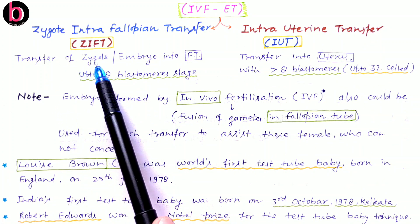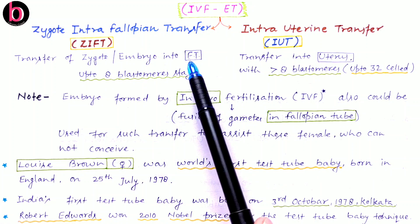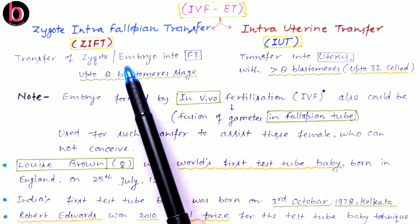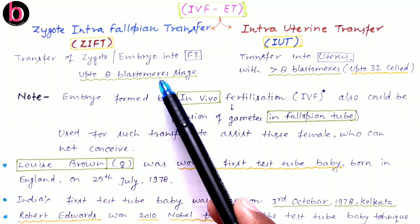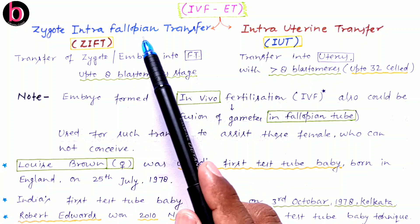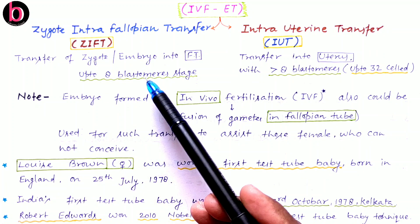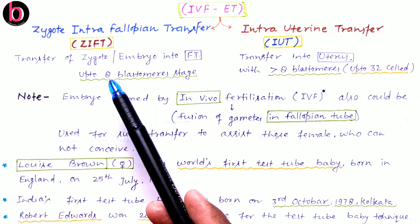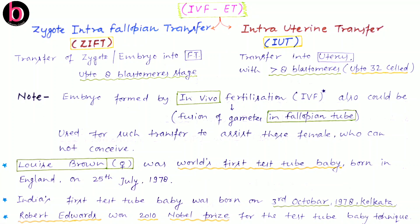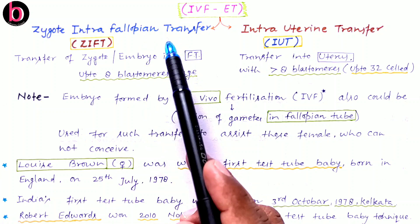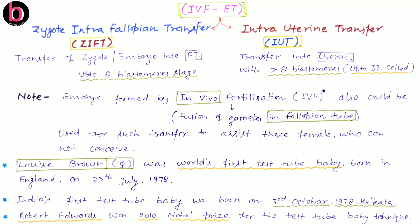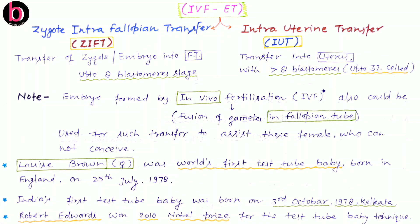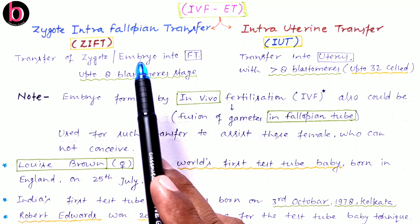In ZIFT, transfer of the zygote or embryo occurs into the fallopian tube. A zygote is a single-cell structure, while a structure with more than one cell after embryonic mitosis is known as an embryo. If we are transferring up to the eight-blastomere stage embryo into the fallopian tube, this is ZIFT. Blastomeres are the individual cells of the embryo. When the number of blastomeres is eight or below eight, further development is needed inside the fallopian tube, because implantation most probably occurs at the 32-cell stage.